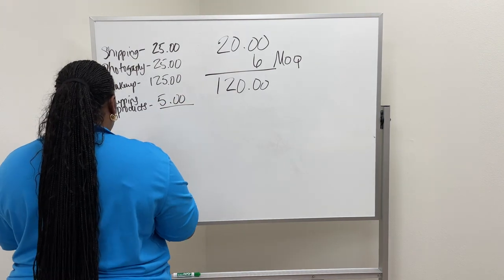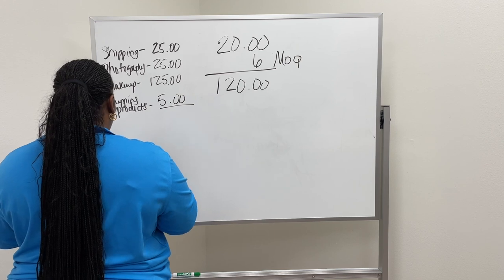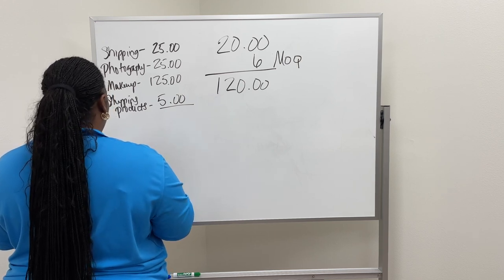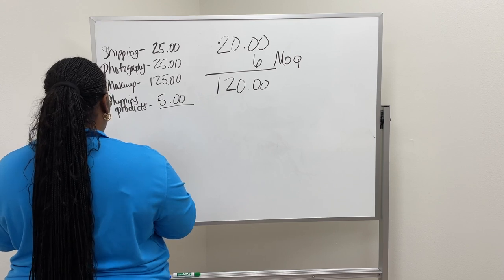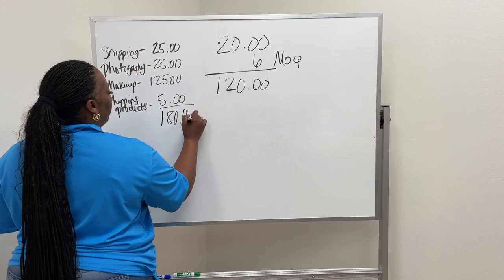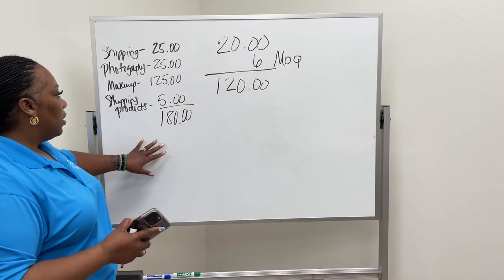So let's add this up. Here we go: twenty-five plus twenty-five plus one twenty-five plus five dollars, so that's $180.